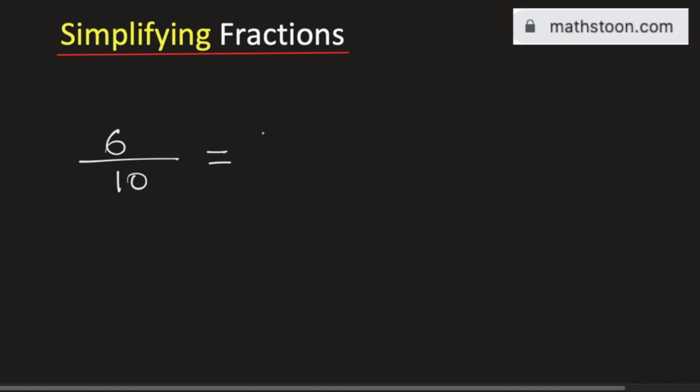We know that 6 can be written as 2 times 3 and 10 can be written as 2 times 5. Look, 2 is a common factor, so we can cancel it out.